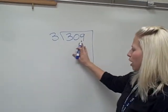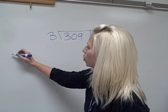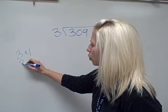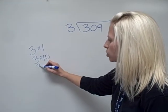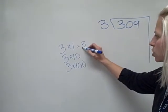We're going to start this problem the same way, 309 divided by 3. We're going to do 3 times 1, 3 times 10, 3 times 100. We're still going to use our landmarks here to help us solve.